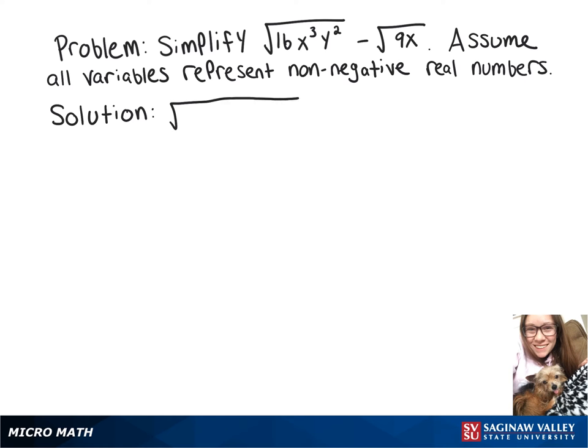So our first one, we can turn into the square root of 16 times x squared times x times y squared. And then our second one, I'm just going to leave alone for now, so that's just minus the square root of 9x.